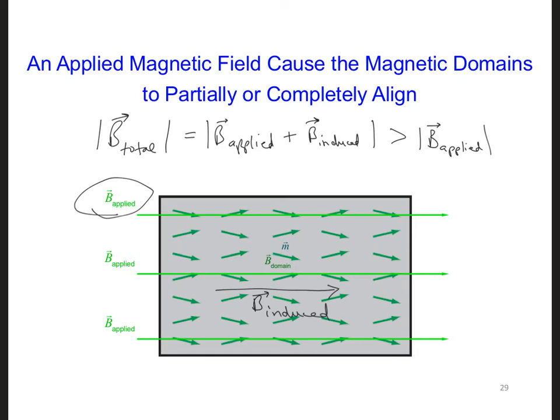Remember how we quantified the reduction of electric fields in a dielectric material with rotating dipoles? They would create an electric field that would actually point in the opposite direction of the applied electric field. And we could quantify this reduction of electric field using relative permittivity. Now we can quantify the increase of the B field in a magnetic material by defining a relative permeability, mu r.